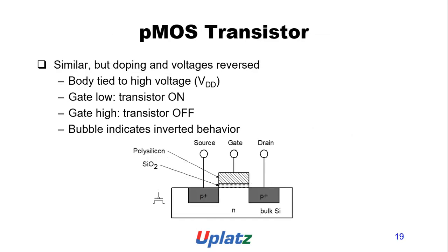The PMOS transistor is similar but doping and voltages are reversed. Body is tied to VDD. When gate is low, the PMOS transistor is on; when gate is high, transistor is off. A bubble in the symbol indicates inverted behavior.